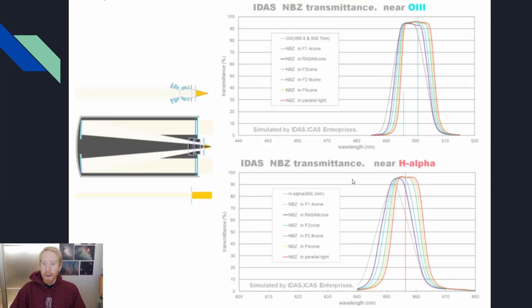To understand the effect of central obstruction on fast systems with narrowband filters, one of the best references is the IDAS specifications for their 12nm bandpass filters — the IDAS NBZ. The focal ratio determines the maximum incidence angle of light rays towards a narrowband filter placed in the light path. This is critical because of how narrowband filters are built: when light hits at an incidence angle, there is a bandpass shift towards the blue — a blue shift. IDAS published very complete diagrams showing how this affects both their Oxygen-3 and H-alpha bandpasses.